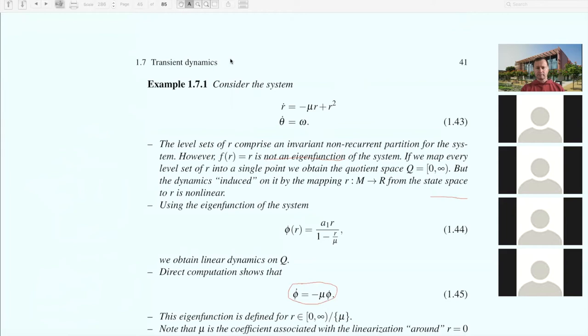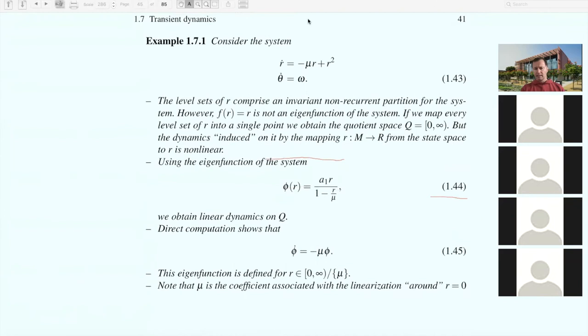You can say that you have linearized dynamics everywhere except at this unstable fixed point. The level sets of phi give you an invariant partition. Notably, mu that features in this equation for the eigenfunction is really the mu you get by linearizing this nonlinear equation around R equals zero.